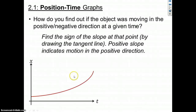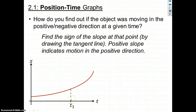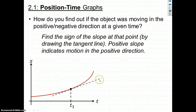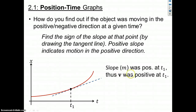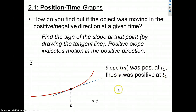We could find out if an object is moving forward or backward even if we don't have a straight line. Here's an XT curve that is bent upward. At some time T1, we can draw the tangent line. Whatever the sign of its slope tells us if we're moving in the positive or negative direction. This slope is positive at T1, so the object had a positive velocity at T1, which tells us it was moving in the positive direction.